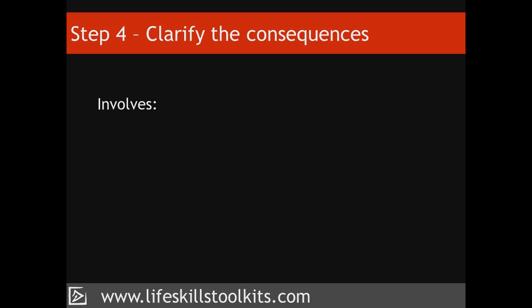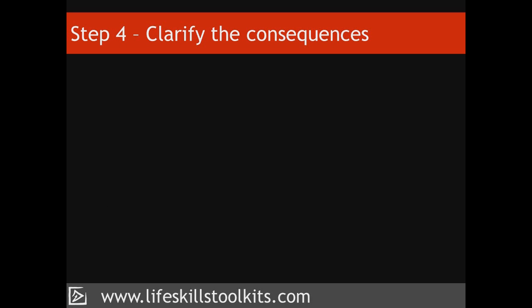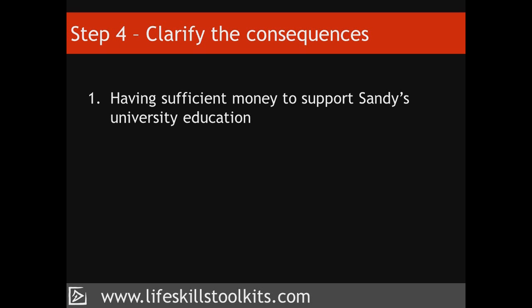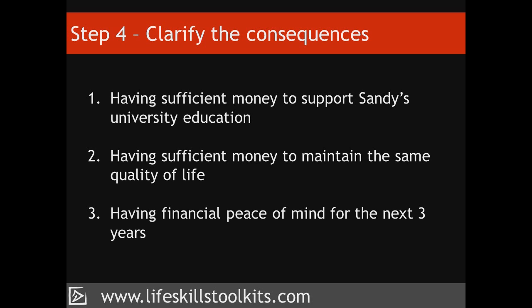Step 4: Clarify the consequences. When we clarify our consequences, we're doing two things: first, we use our decision objectives to help us think about what would happen – the consequences – for each of the outcomes we've identified; and second, we describe the consequence. Franny's three objectives are having sufficient money to support Sandy's university education, having sufficient money to maintain the same quality of life she enjoyed before her divorce, and having financial peace of mind for the next three years to concentrate on developing her new business. Using each objective, she explores what the consequence will be for each of the outcomes she identified in step two.